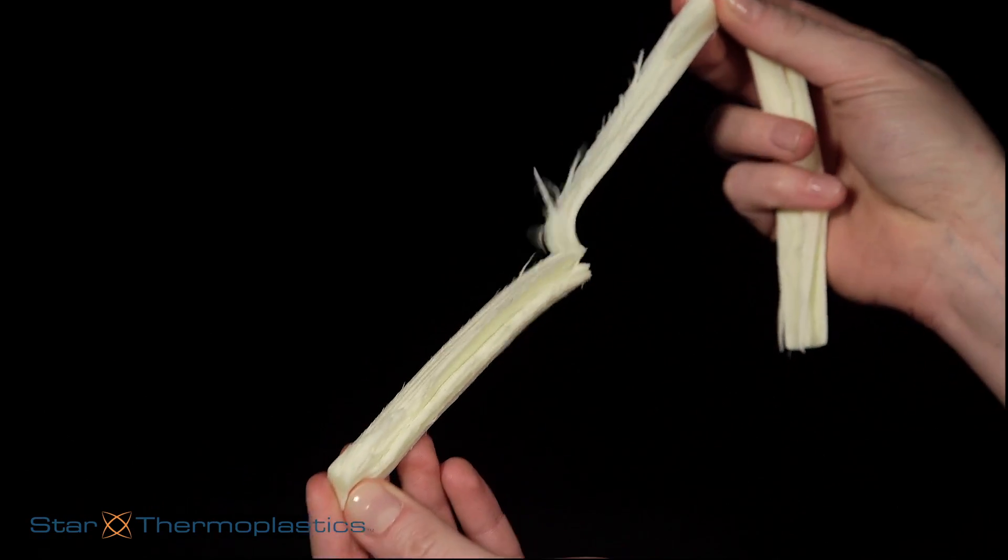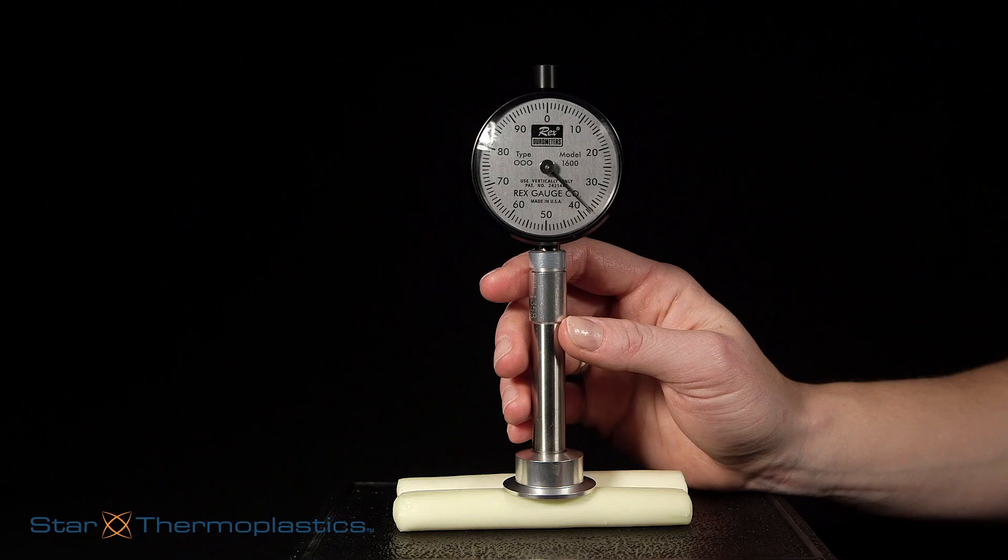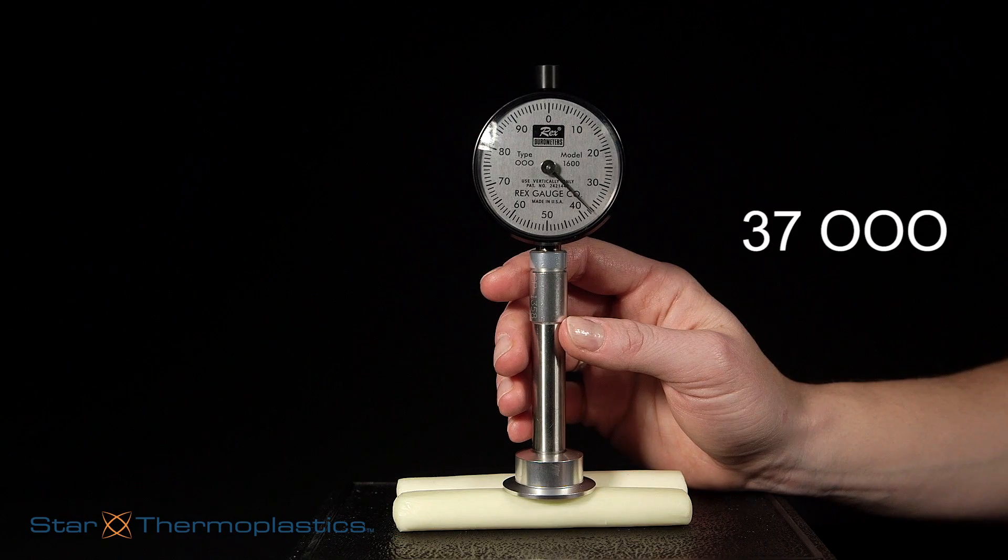Mozzarella cheese is known for its softness, and we will test it on the triple-aught scale. This has a durometer of 37 triple-aught.